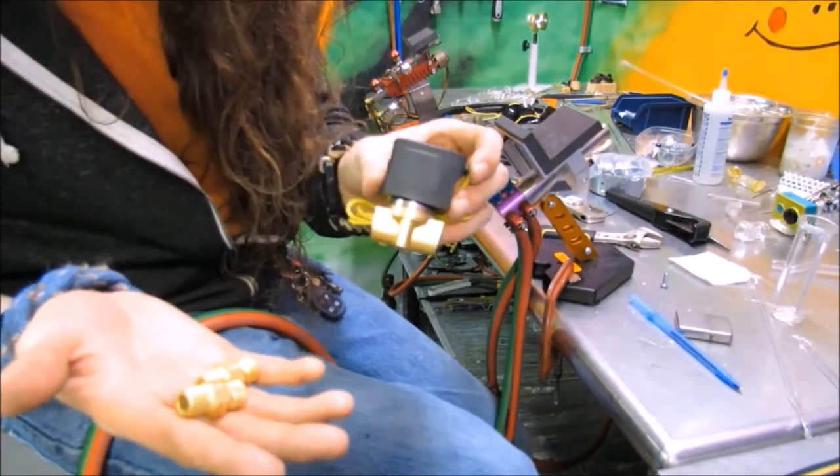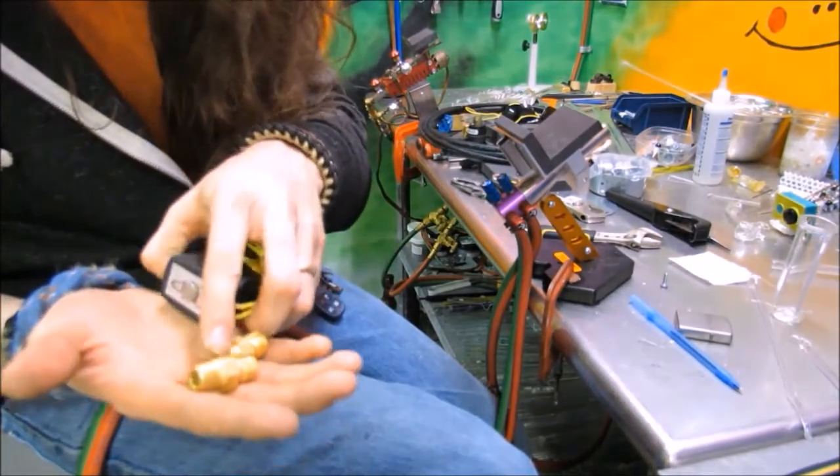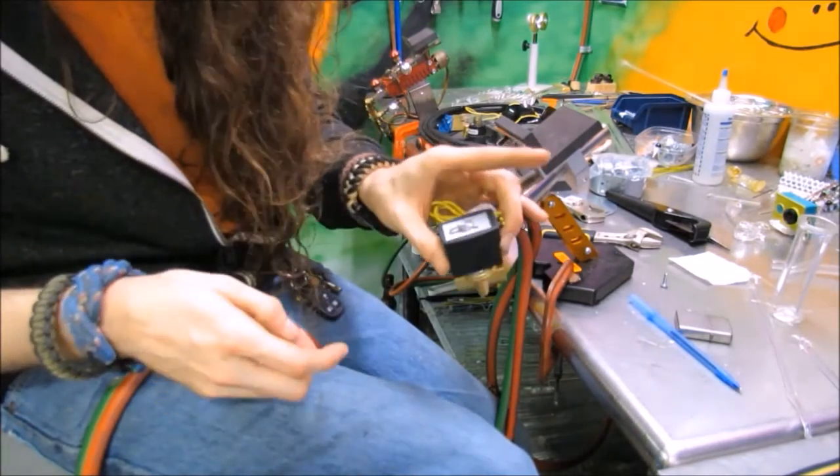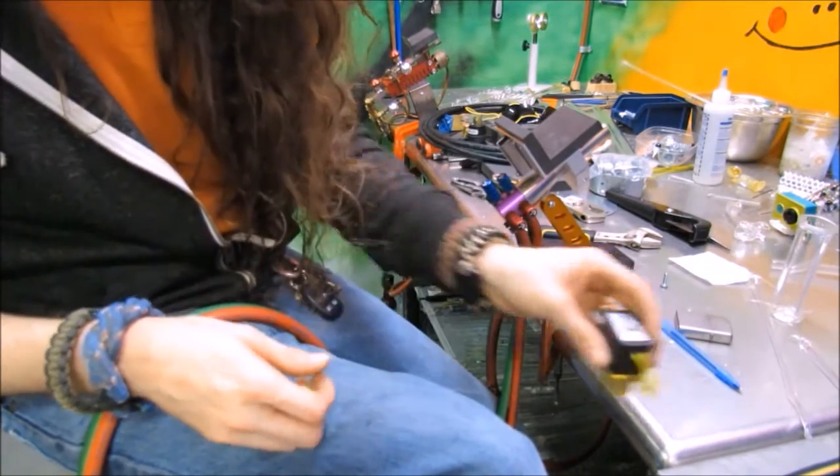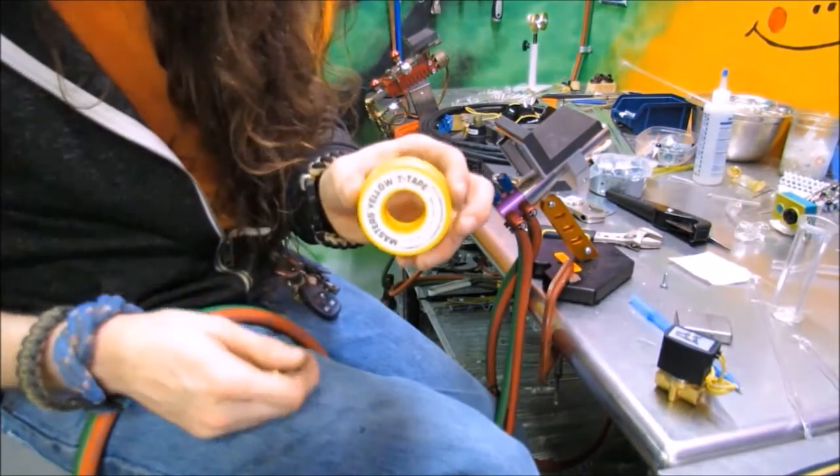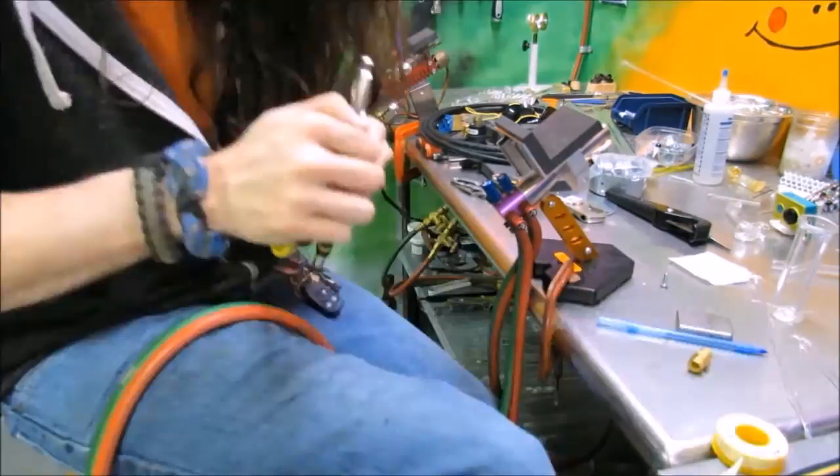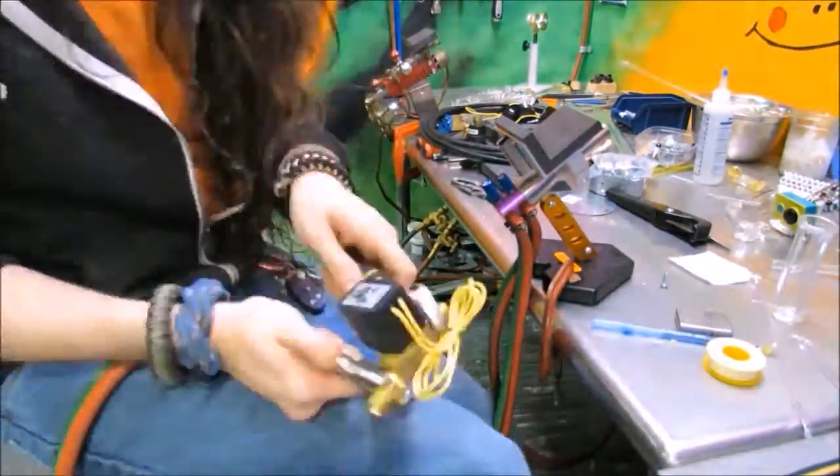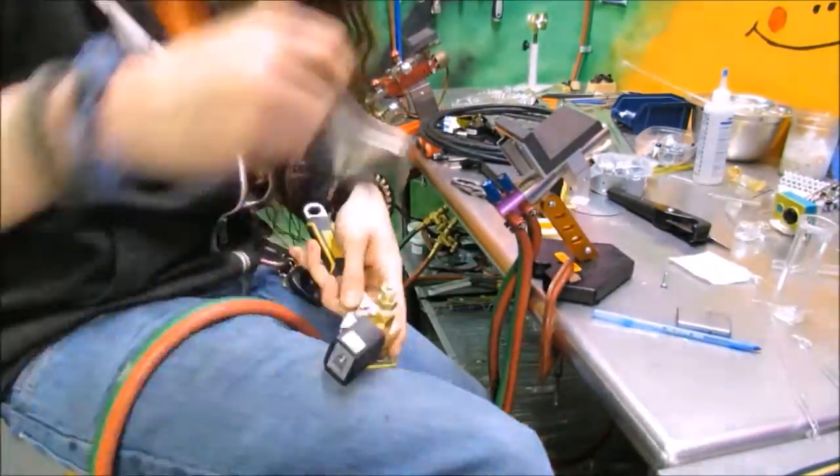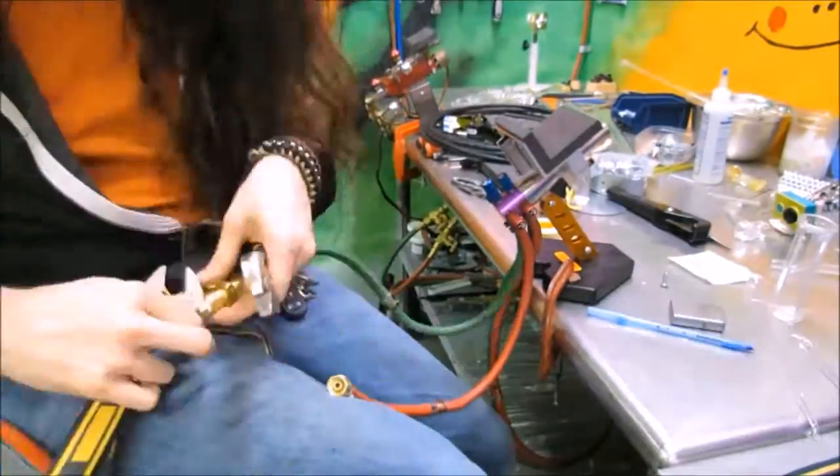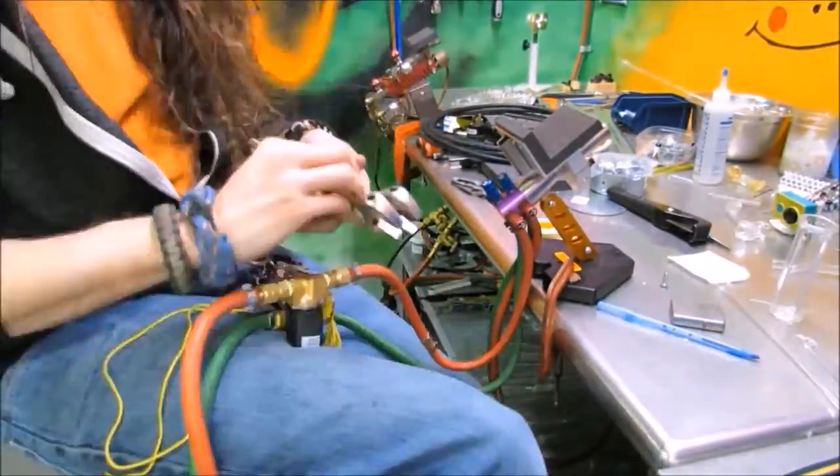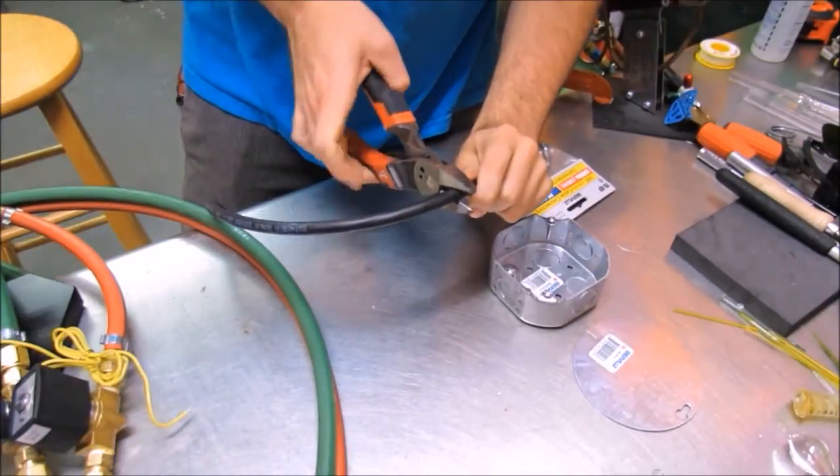Next we're going to put the adapters on the solenoids, and make sure to put both propane on the same solenoid, and both oxygen on the other. We're going to use the yellow Teflon tape.